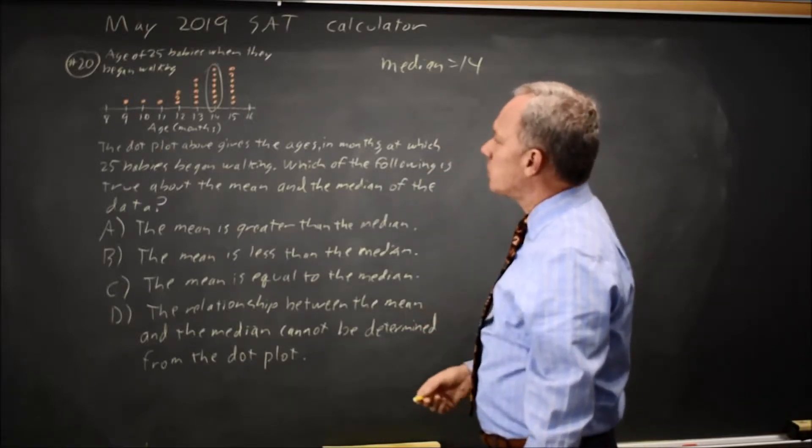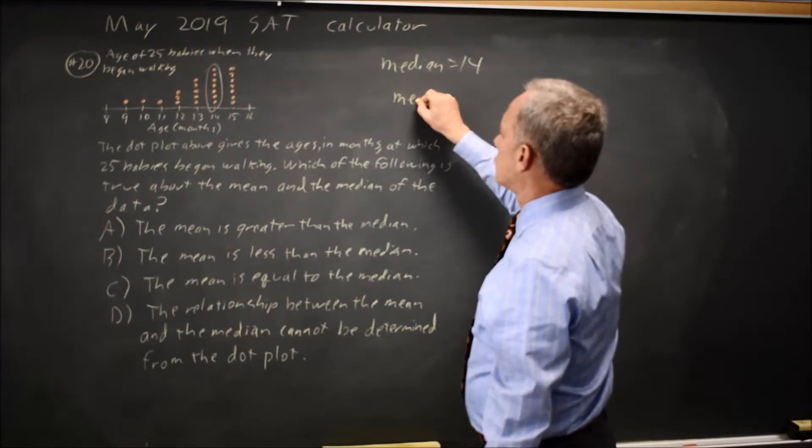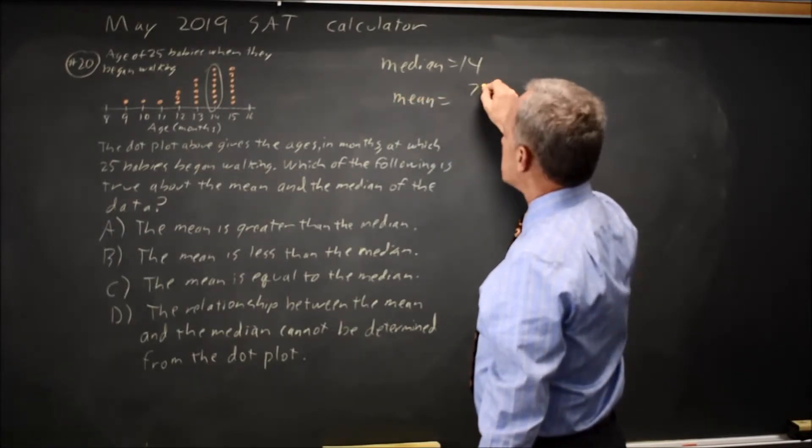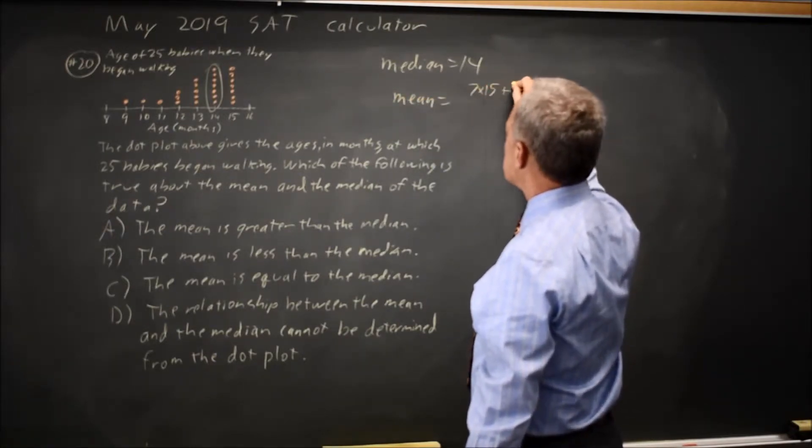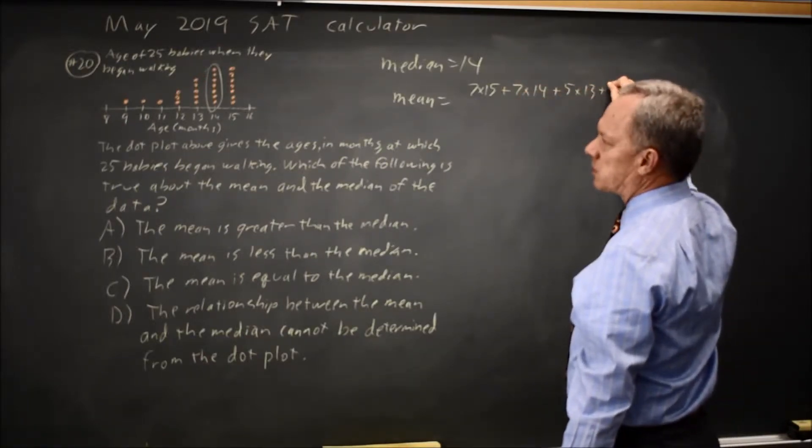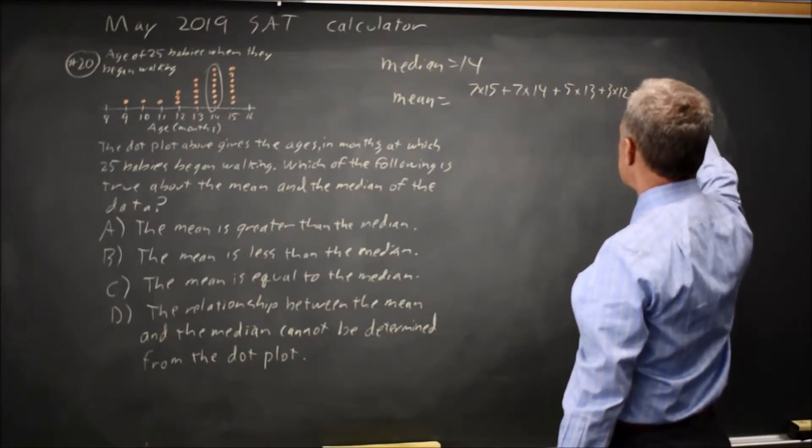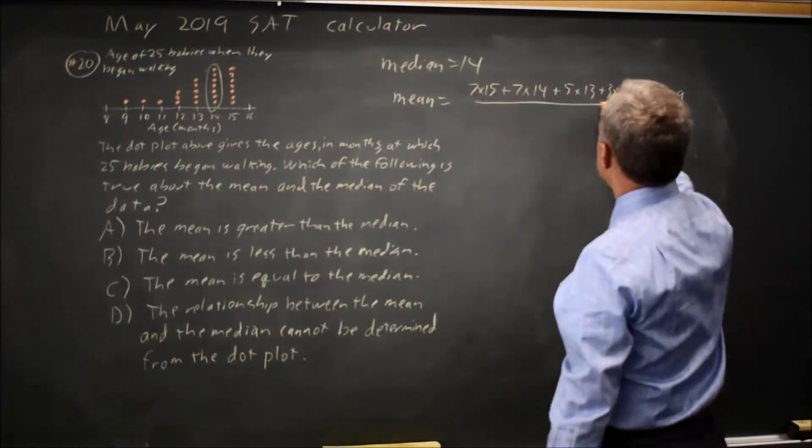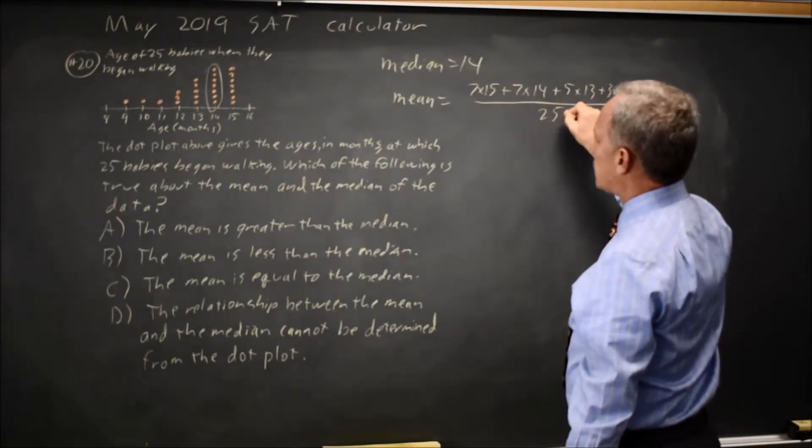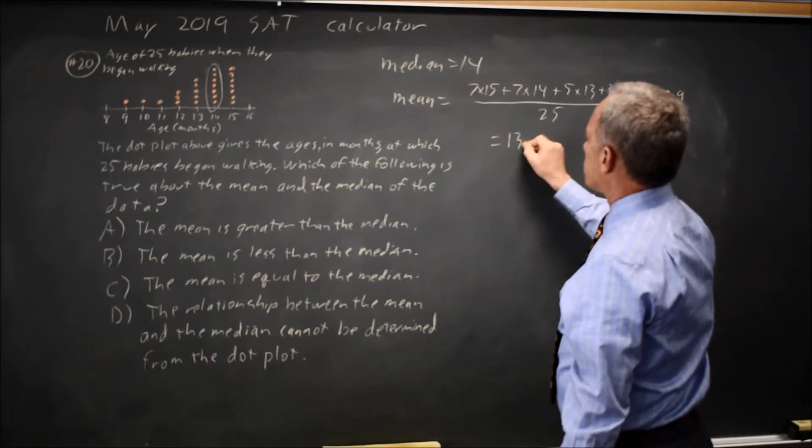So that's our median. The mean, if you add up these numbers, 7 times 15 plus 7 times 14 plus 5 times 13 plus 3 times 12 plus 11 plus 10 plus 9 and divide by 25, that's the mean and that's 13 point something.